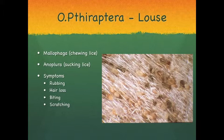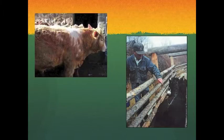Sucking lice have a small, narrow, distinct head which is designed for piercing the skin. They are usually found around the head and neck of the cattle. Large infestations could cause anemia to the host organism. Lousy cattle may cause damage to fences, yards, or trees which the cattle use as a rubbing post. The fur of lousy cattle takes on a distinct rough, scurvy appearance, and at times areas of skin are rubbed raw.